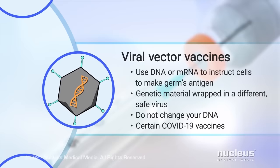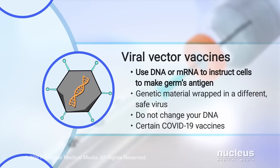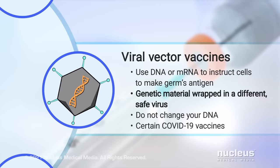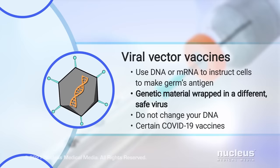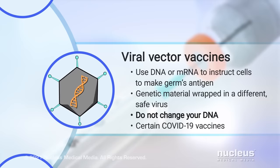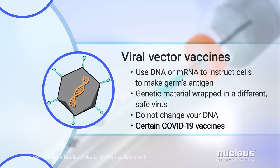Viral vector vaccines may use either DNA or mRNA to provide cells with instructions to make a germ's antigen. The genetic material is wrapped in a different, safe virus to take the instructions into your cells. These vaccines do not change your DNA. Examples are certain COVID-19 vaccines.